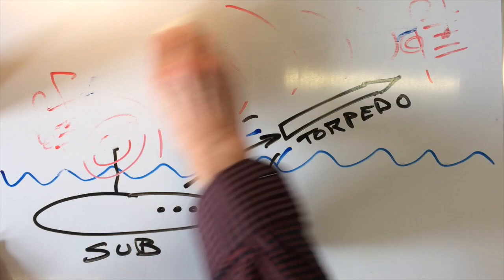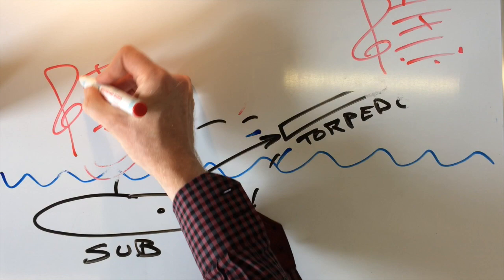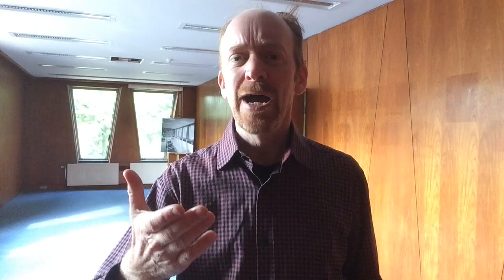But what if the signal kept changing frequencies? Imagine that you have two player pianos, here and here - torpedo, submarine - each playing the same piece of music. That's called frequency hopping, because the notes keep changing, the frequencies keep changing.